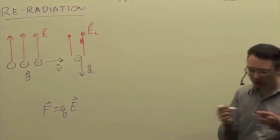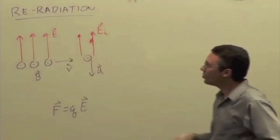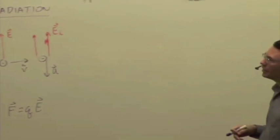And if we have an accelerated charge, it's going to emit radiation itself. So this charge emits radiation in all directions except along the direction of acceleration.